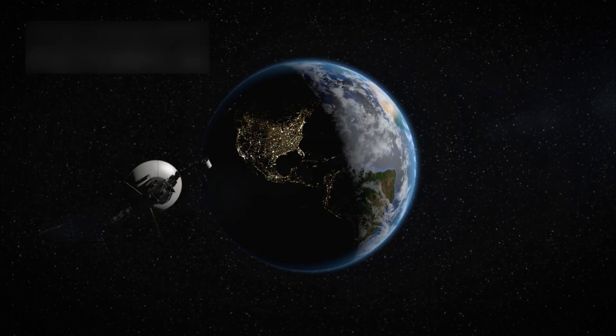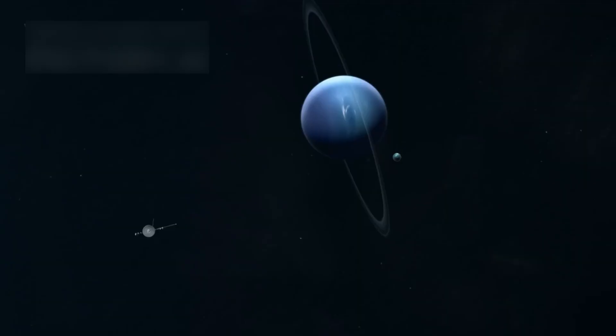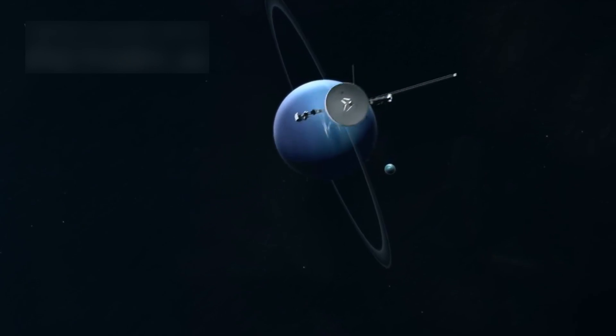Voyager 1, built with 1970s technology, went far beyond its original purpose. It became a pioneer, sending back stunning and detailed data of planets, their rings, and moons.